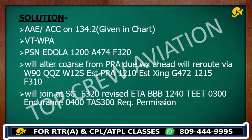We have to revise the ETA: Bravo Bravo Bravo 1240. TT 0300. We take approximate values for TT, endurance, and TAS as per the aircraft — if not mentioned in the question, they will almost never mention it. Endurance is about one hour more than your TT. TAS 300 knots. Request permission.